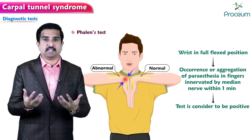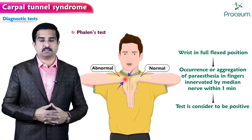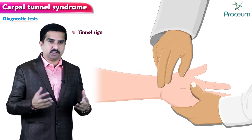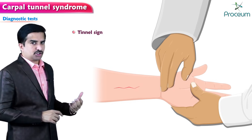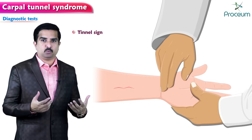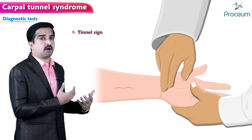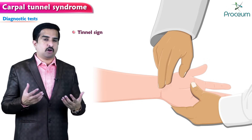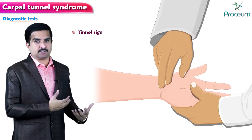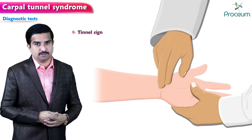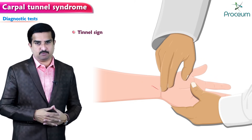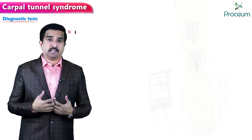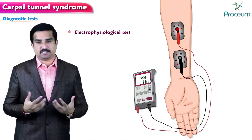The Phalen's test finding is considered highly specific — approximately 85 percent specific for the diagnosis of carpal tunnel syndrome. Tinel's sign involves percussion or tapping with the fingertips over the carpal tunnel, which leads to shooting pain and/or paresthesia in the fingers innervated by the median nerve.